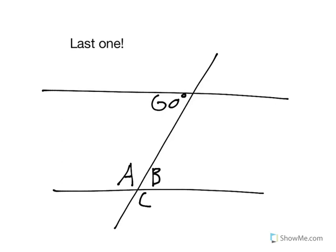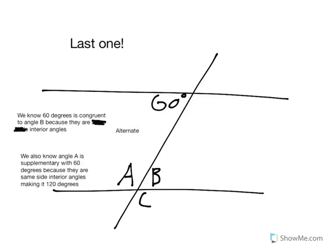Use what we have learned about angles to find angles A, B, and C. We know angle A is supplementary with 60 degrees because they are same side interior angles, making it 120 degrees. Angle A and C are vertical angles, making them congruent. We know angle A is 120 degrees, therefore angle C is 120 degrees.